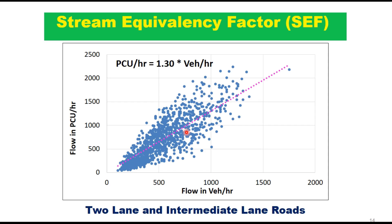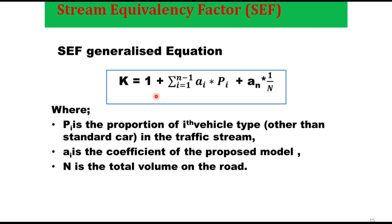If you plot flow in PCU per hour against flow in vehicles per hour using a large amount of data, you get a cloud of scattered data. Fitting an equation gives something like: flow in PCU per hour = 1.3 × flow in vehicles per hour. However, the data are very scattered and the reliability of this equation is very poor, because the k factor depends on both traffic composition and traffic volume.